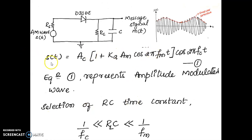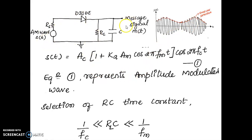To realize this, we know the amplitude modulated signal expression. This represents a carrier signal at frequency Fc, and there is a modulating signal at frequency Fm, which represents the envelope of the AM signal. When realizing this envelope detector, we have to ensure that the RC time constant satisfies a particular condition so that it can efficiently detect the envelope of the AM signal, which is the modulating signal.